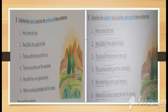Next example: 'New Delhi is the capital of India.' So 'New Delhi' is the subject, telling us who the sentence is about, and 'is the capital of India' is the predicate, telling us something about the subject.